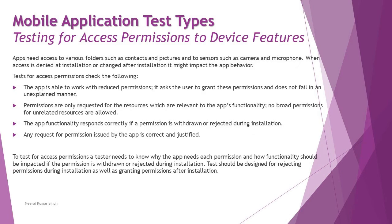The second part is testing for access permission to device features. When an app is installed, you are prompted to allow access to many things. The question is: does the app really have permission to access the right things? How does the app react if permission is allowed, and what happens if permission is denied? Apps need access to various folders such as contacts and pictures, and to sensors such as the camera and microphone. When access is denied at installation or changed after installation, it may impact the app behavior.